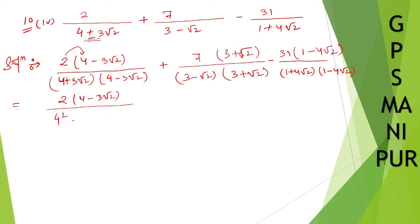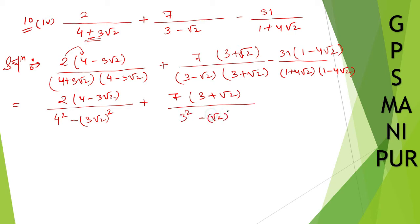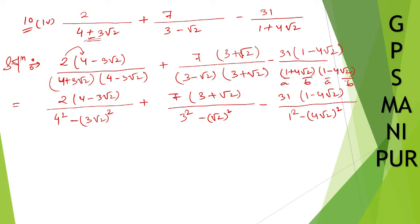So I can write the denominators as: 4 squared minus (3 root 2) whole squared. Then plus 7 times (3 plus root 2) divided by 3 squared minus (root 2) whole squared. Minus 31 times (1 minus 4 root 2) divided by 1 squared minus (4 root 2) whole squared. This uses the A squared minus B squared formula: (A plus B)(A minus B) equals A squared minus B squared.